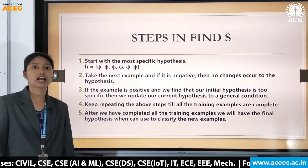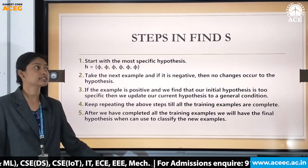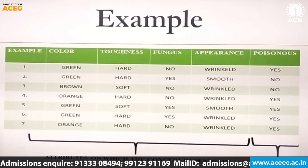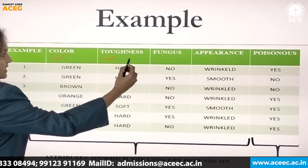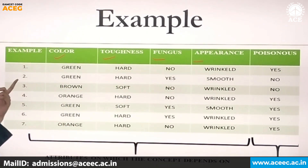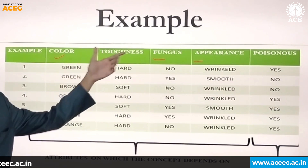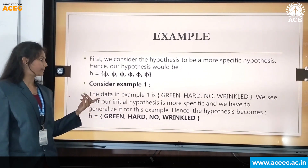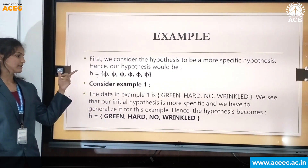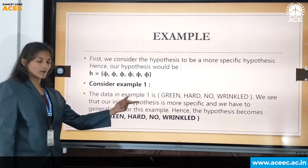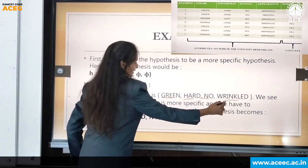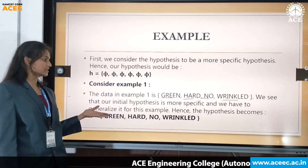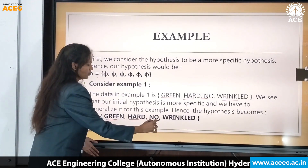My friend Akanksha will now explain the Find S algorithm example. Consider a dataset with attributes: color, toughness, fungus, and appearance, used to determine the concept 'poisonous.' We start with the hypothesis as a set of null values (most specific). For example one, the data is green, hard, no, and wrinkled. Since the initial hypothesis is more specific, we generalize it, so the hypothesis becomes {green, hard, no, wrinkled}.